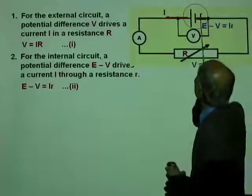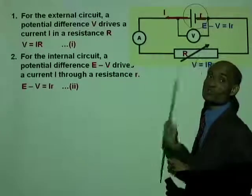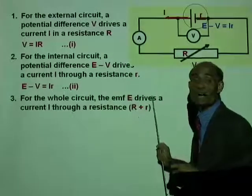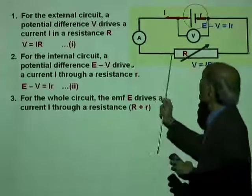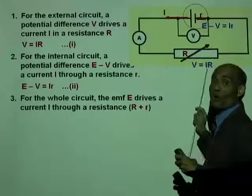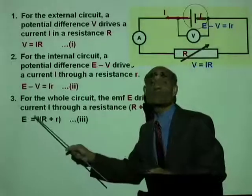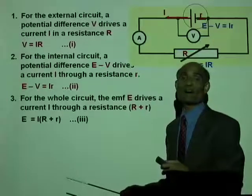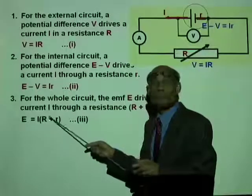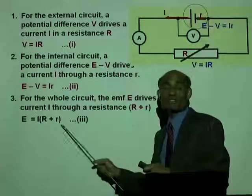For the whole circuit, the EMF E drives current I through total resistance R plus r, giving E = I(R + r). You can verify this by adding equation 1 (external) and equation 2 (internal) together to get the full circuit equation.